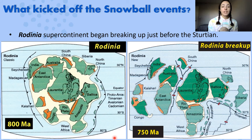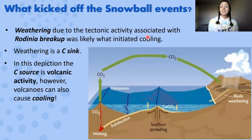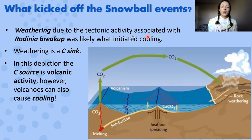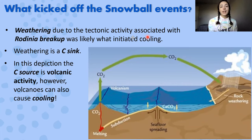A big component in kicking off these Snowball Earth events is the Rodinia breakup. Rodinia was a supercontinent that formed around 1 billion years ago and began to break up around 750 million years ago, a few million years before the Sturtian glaciation. This supercontinent breakup is important because the abrupt increase in weathering due to increased tectonic activity led to a huge carbon sink — silicate weathering transports carbon to ocean basins where calcium carbonate forms, gets buried, and stores that carbon long-term.